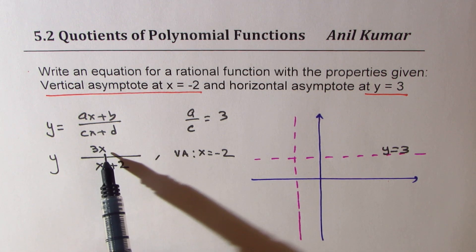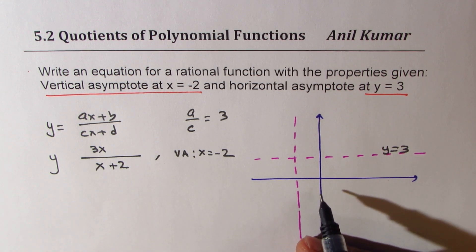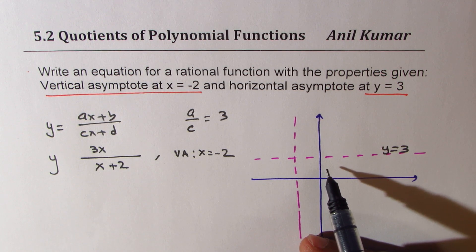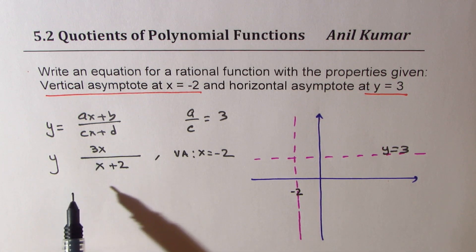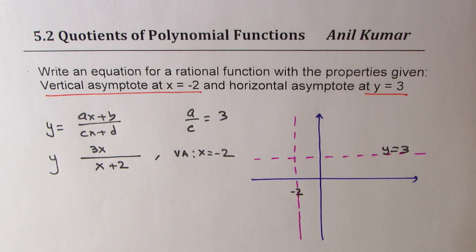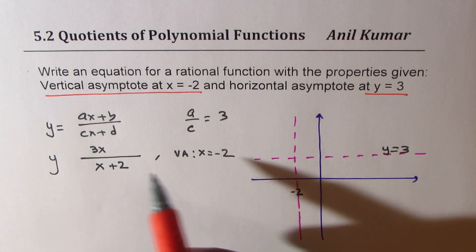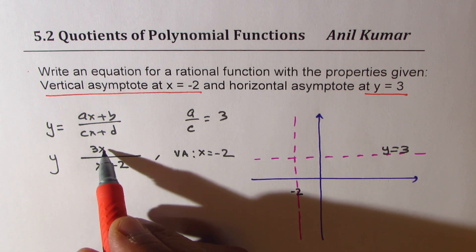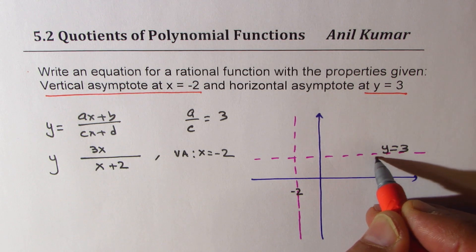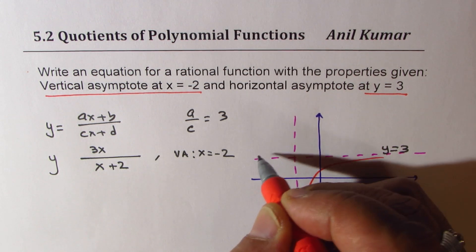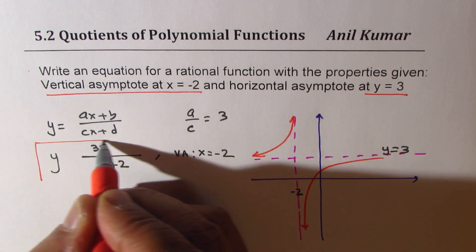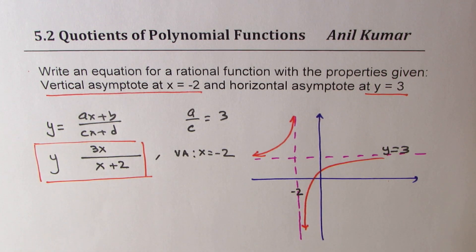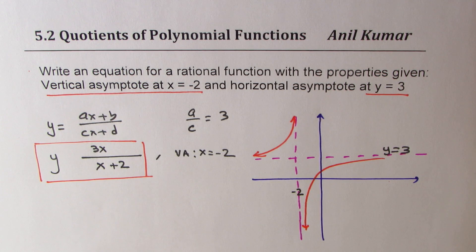The vertical asymptote is at x equals -2. If I write -3 in the numerator, both are negative and we get a positive value. Making a table of values to sketch the function: at x equals 0, I get 3 over 2, which is less than 3, giving a graph that approaches but stays below the horizontal asymptote. We have met both the criteria — once the concepts are clear, it's not difficult at all.